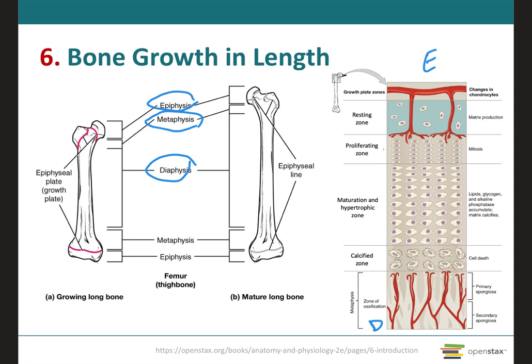The growth in length of a long bone involves interstitial growth of the cartilage on the epiphyseal side of the epiphyseal plate. The epiphyseal plate is a layer of hyaline cartilage in the metaphysis of a growing bone that consists of four different zones: the zone of resting cartilage, the zone of proliferating cartilage, the zone of hypertrophic cartilage, and the zone of calcified cartilage.